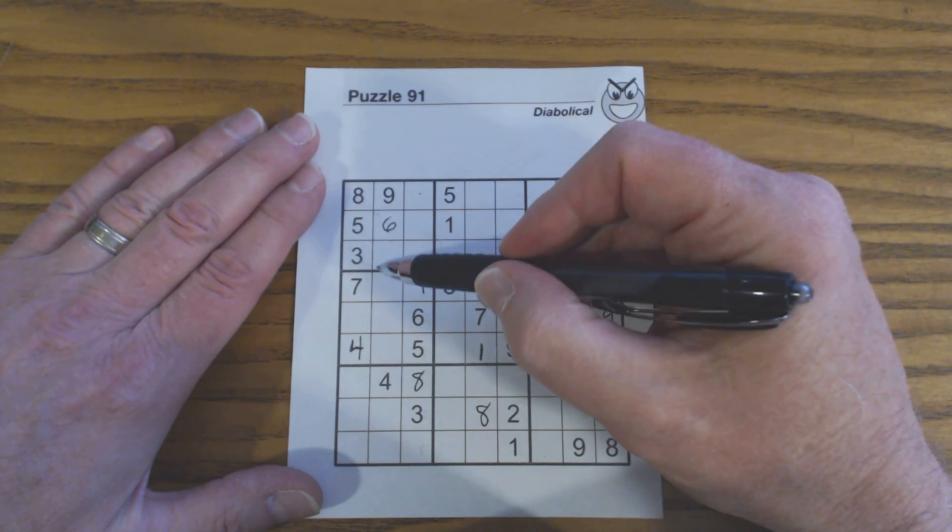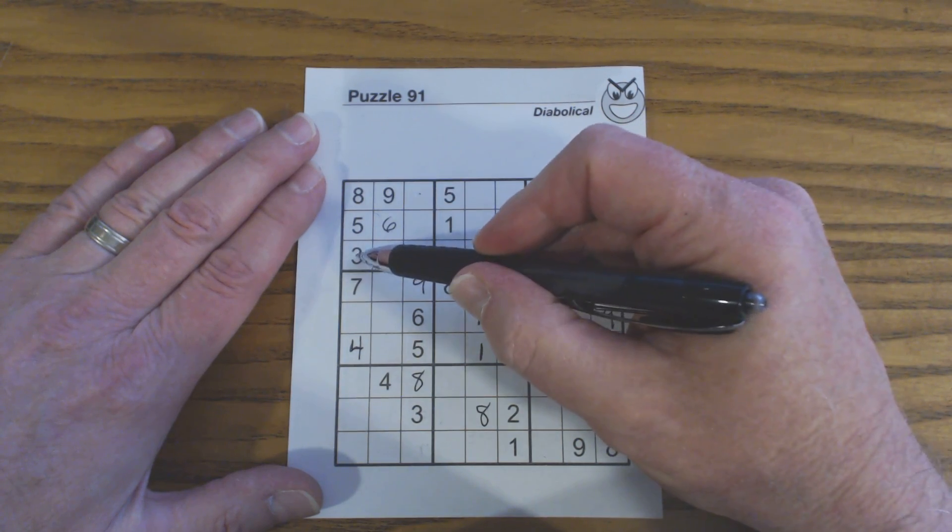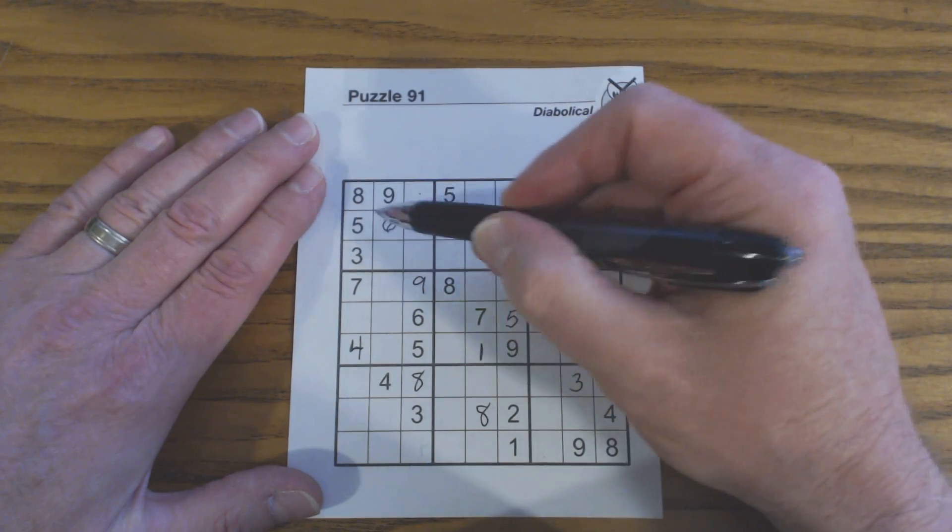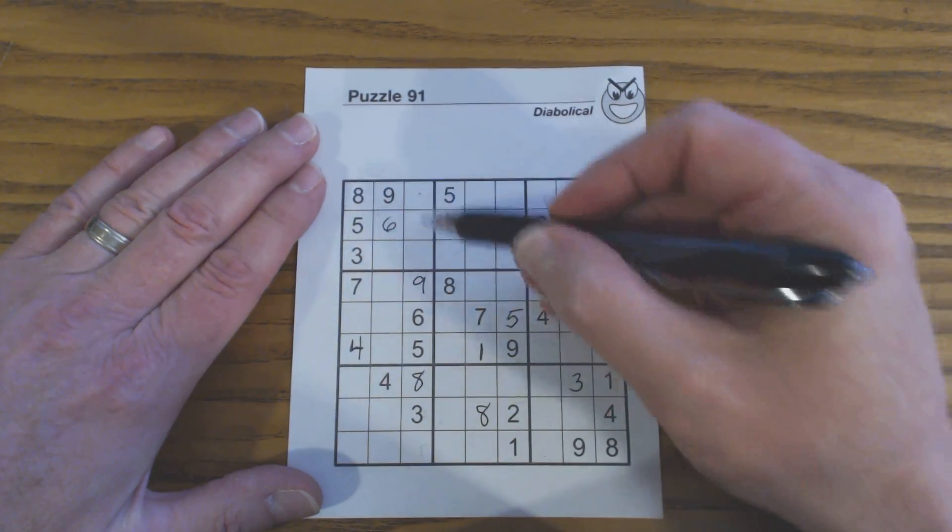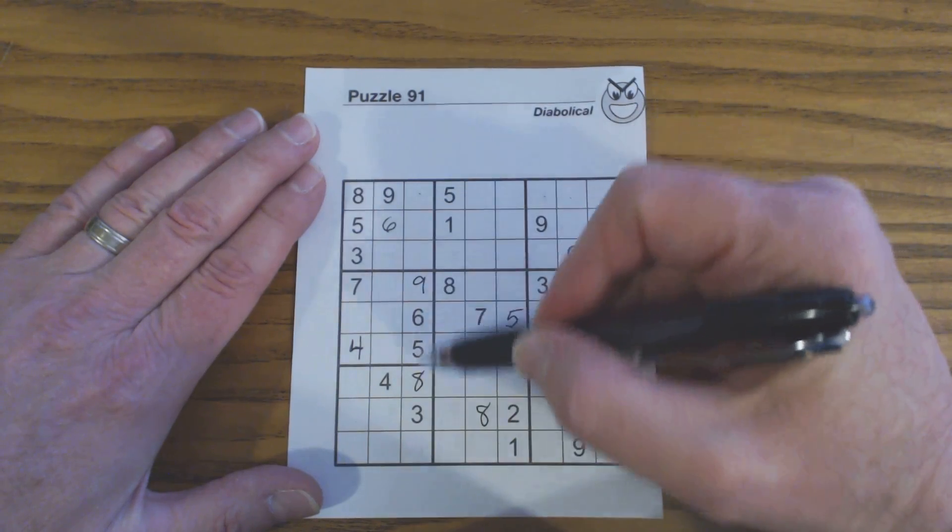Here we're missing 1, 2, 4, 7. We're also missing 1, 2, 4, 7 in this column.